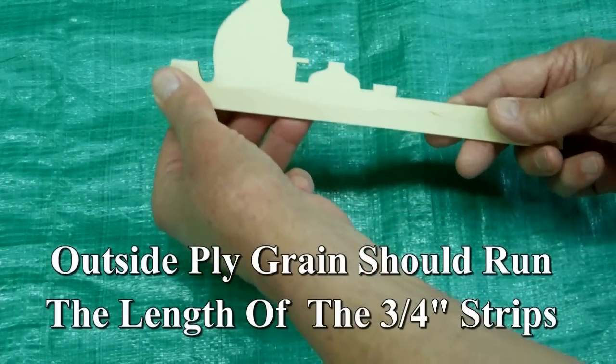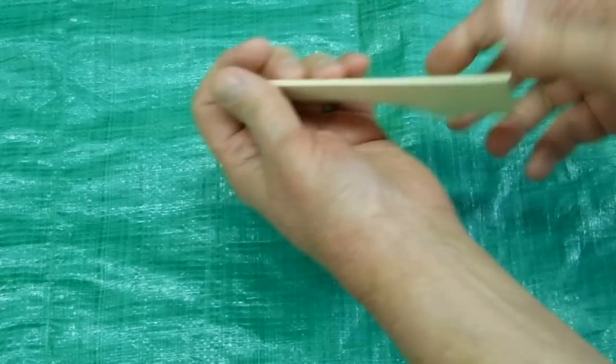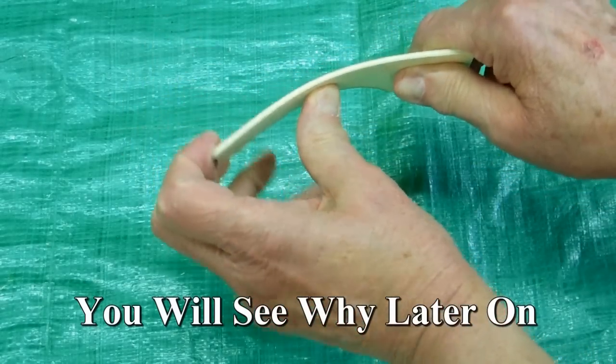Pay attention to the grain of your plywood. When you cut your strips, you want it to be stiff. You do not want your plywood to bend like that.